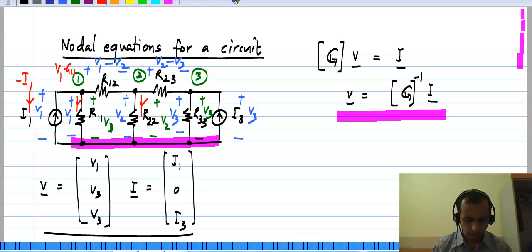So, the current through R22 would be V2 times G22, this is the current through R22 and similarly through R33 it would be V3 times G33.